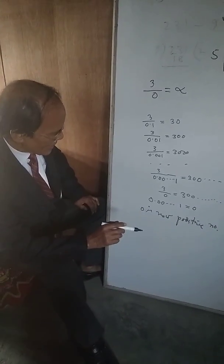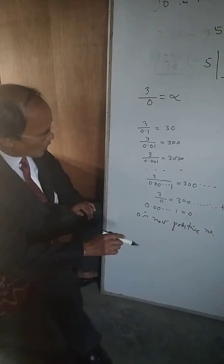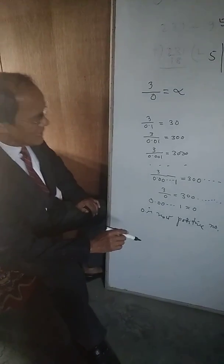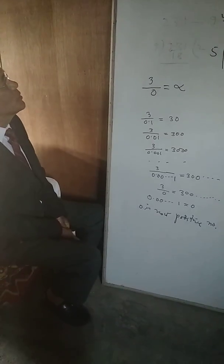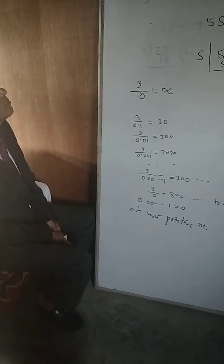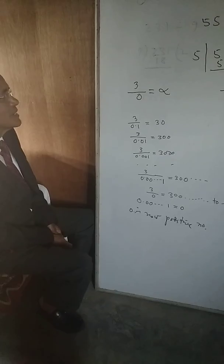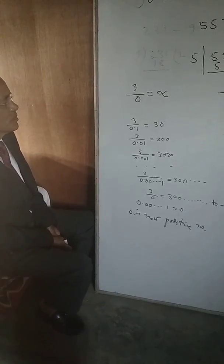Therefore, zero is again negative according to theory. Hence, zero is either positive or negative. It is just opposite to the present theory that zero is neither positive nor negative. So this is my proof of my theory.